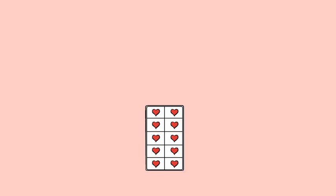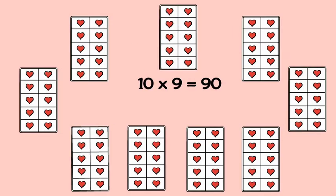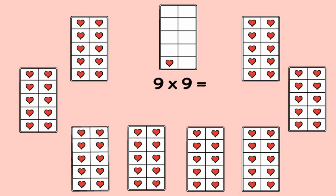9 × 9? 10 × 9 is 90. Take away one group of 9. So 9 × 9 is 81.